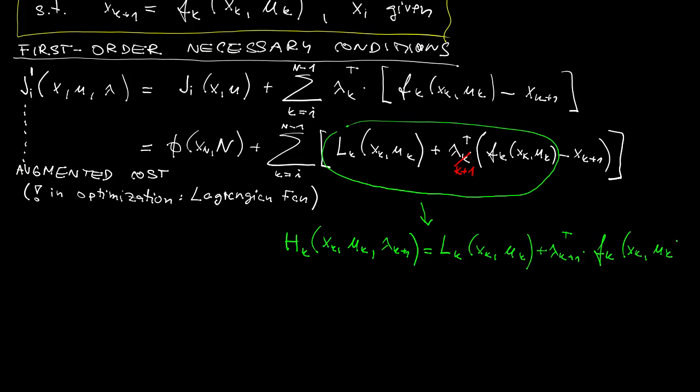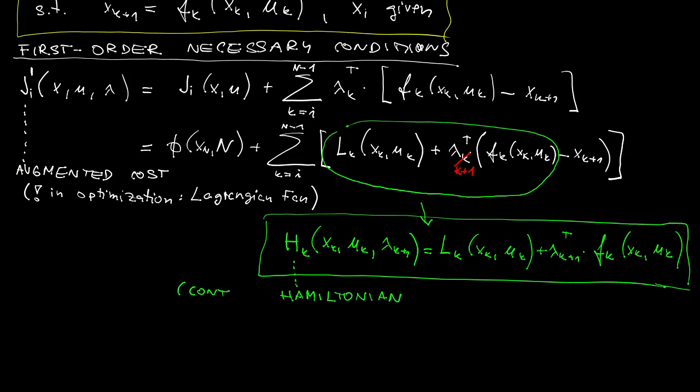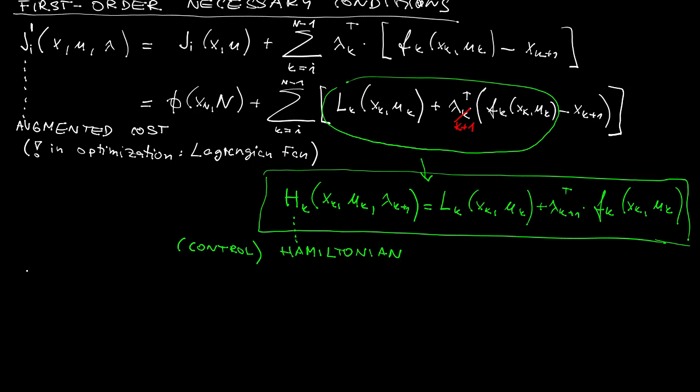And another notational issue here is that I will now take all this term here and label it as H. This we will call Hamiltonian. You may find some resemblance with the Hamiltonian that you are familiar with from physics. However, there is some slight discrepancy with the signs here. That's why it should be perhaps better called control Hamiltonian. But we will make some more comments on this later in this course.